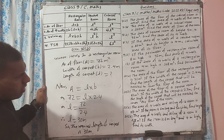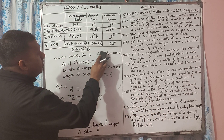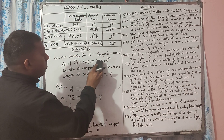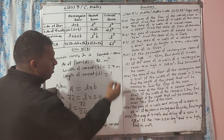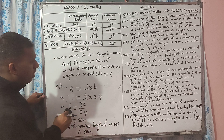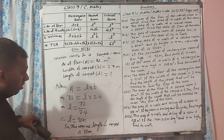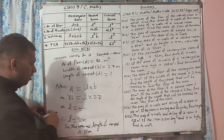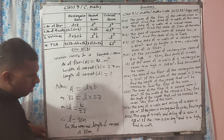Question 10b. In a square room, the area of the floor is 81 meter square. If the width of the carpet is 2.7 meter, find the length. Area of floor equals length × width, so 81 divided by 2.7 gives the length of the carpet as 30 meters.